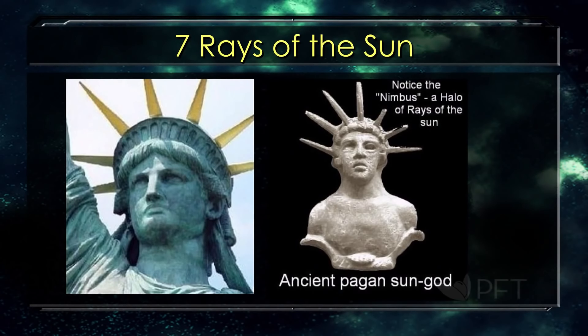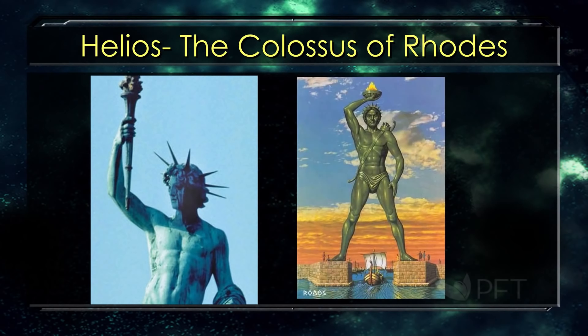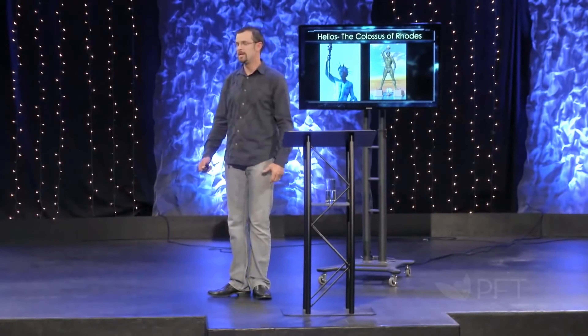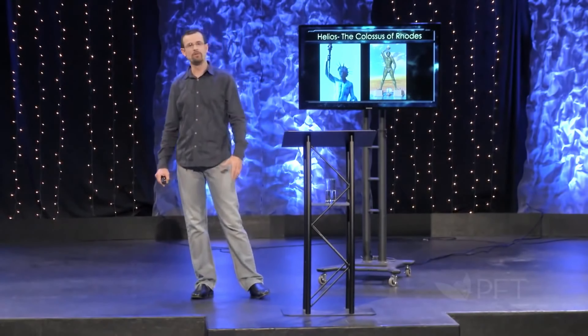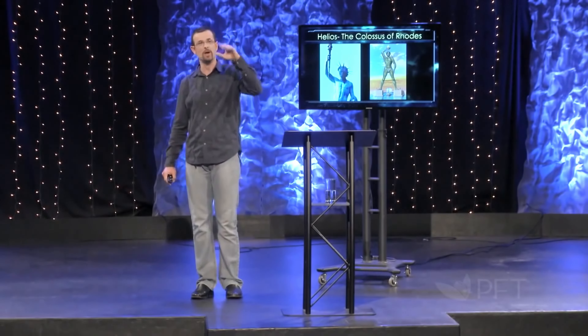The seven rays of the sun — notice the nimbus, the halo of rays of the sun. This is an ancient pagan sun god. It's everywhere; this is not something they just made up. Helios — holding a torch, the Colossus of Rhodes, one of the seven wonders of the ancient world. Where did Bartholdi get the idea of the torch? He took a trip to Egypt and studied these things. This is what he saw — an over 100-foot colossus of Helios with this headpiece of seven rays of the sun. The exact attributes of Helios and the sun god show up in the Statue of Liberty.